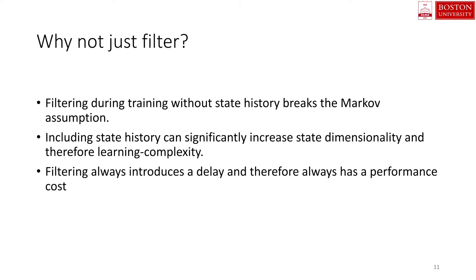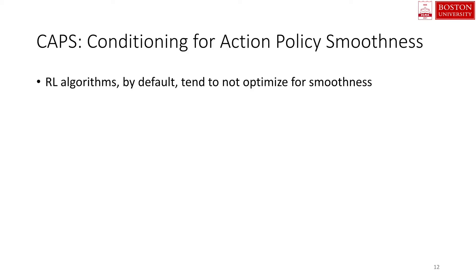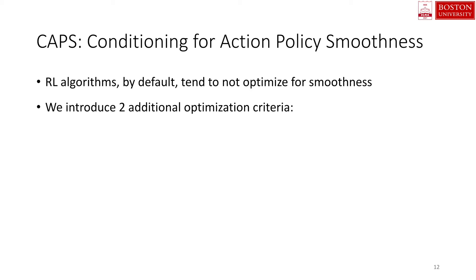If we were to include the state history, thus preserving the Markov property, we'd be increasing the input dimensionality and therefore learning complexity. And this is all in addition to the fact that filtering will always introduce a delay in the response and just inherently comes with a hit to performance. This is not to say, of course, that filtering can't work — the use of filtering is just something that needs further study in its own right. One of the main reasons for jerky control signals is that control smoothness is not something RL algorithms typically optimize for. Instead of engaging in reward engineering and relying on learned value functions to capture the nuances of action smoothness, we chose instead to target how RL policies are optimized, through regularization.